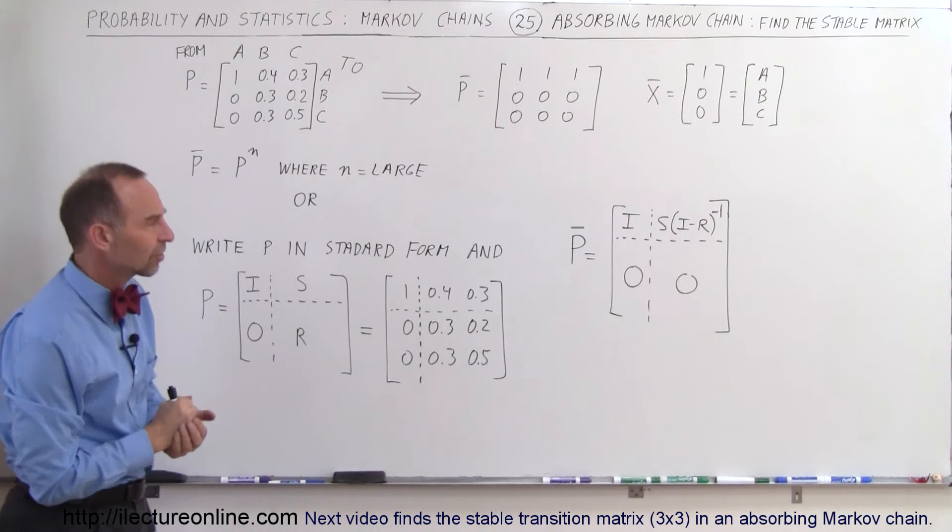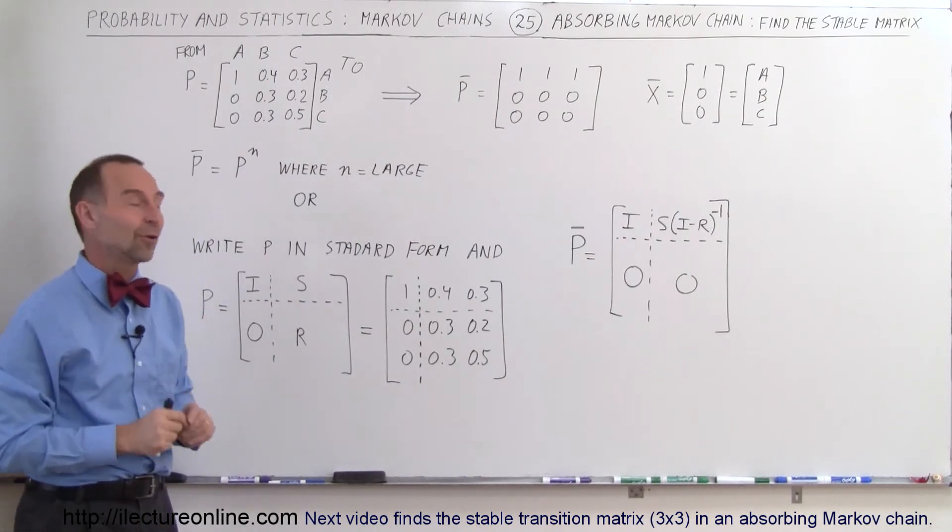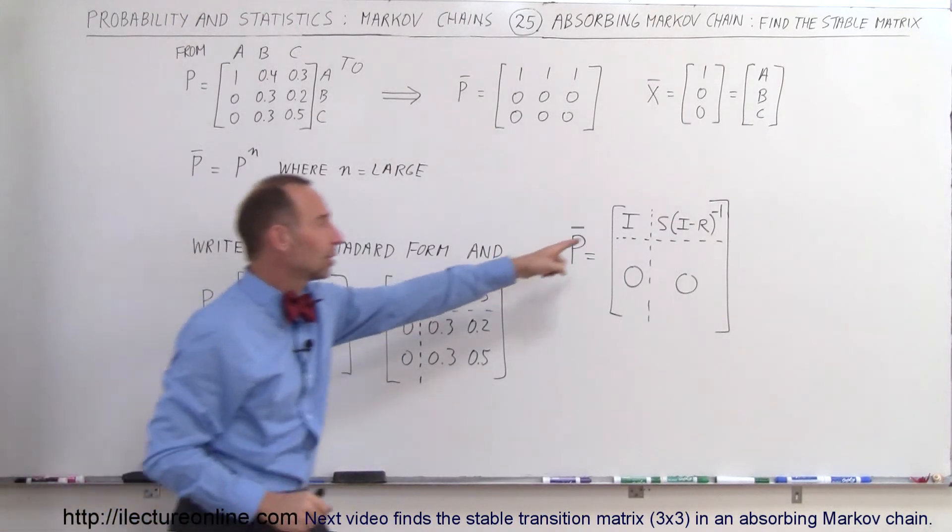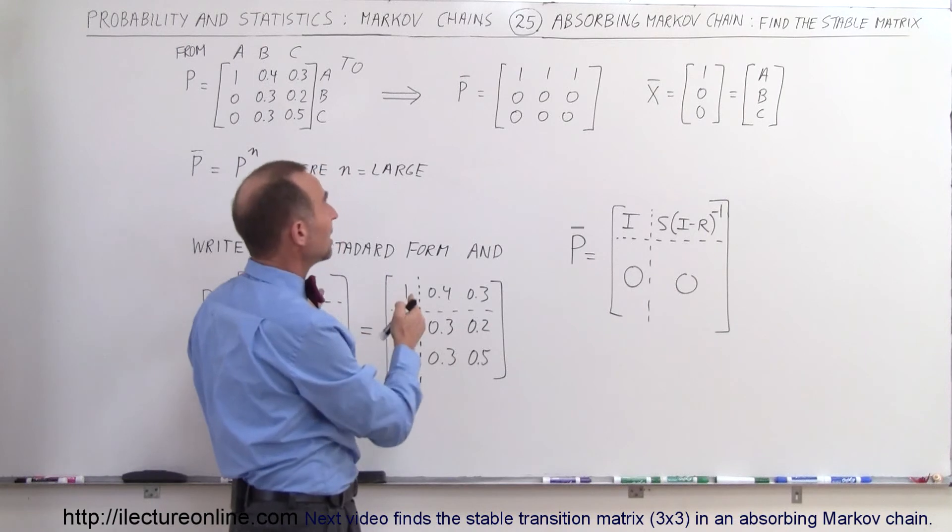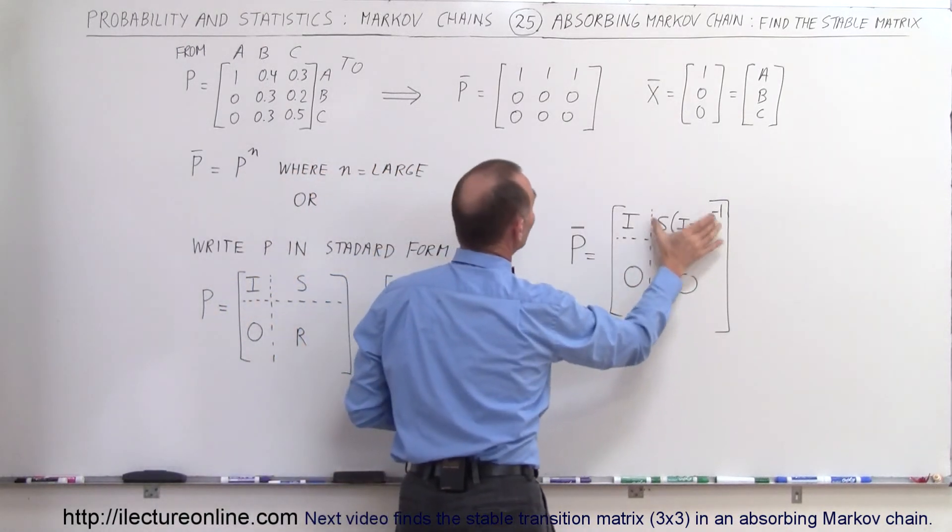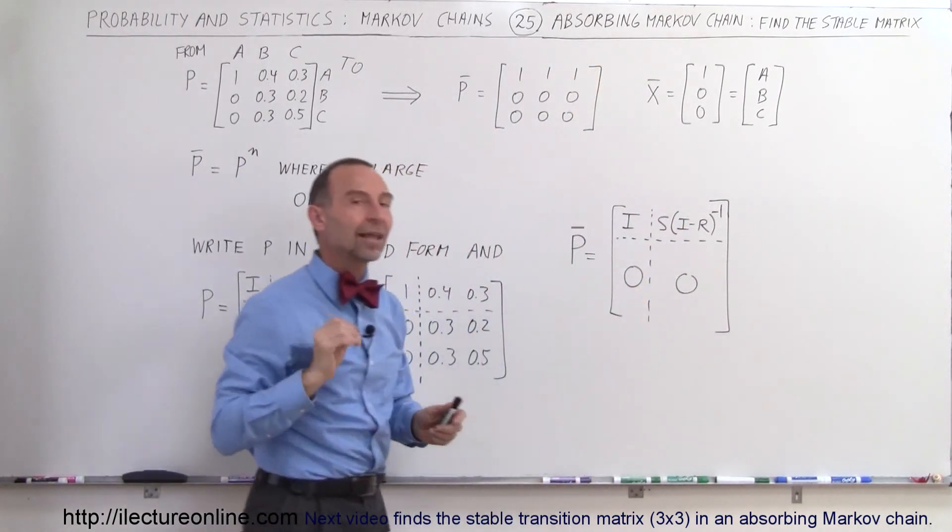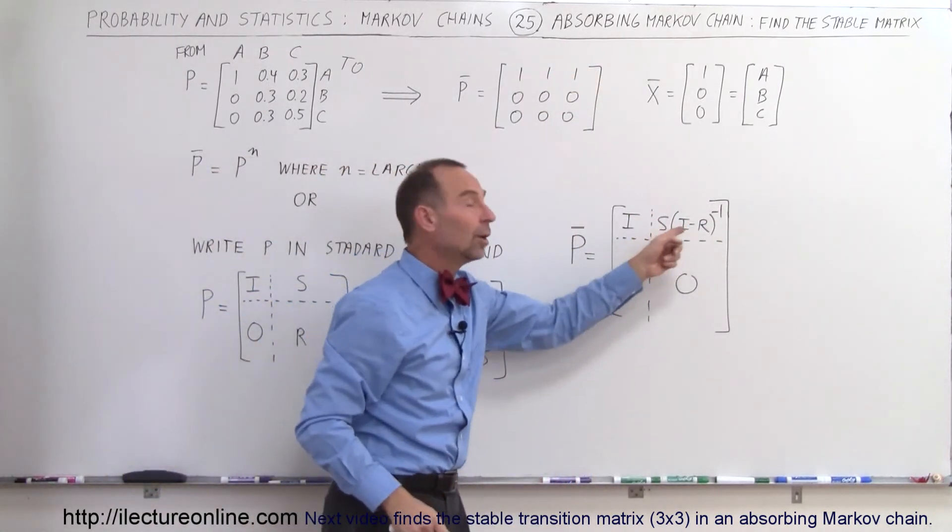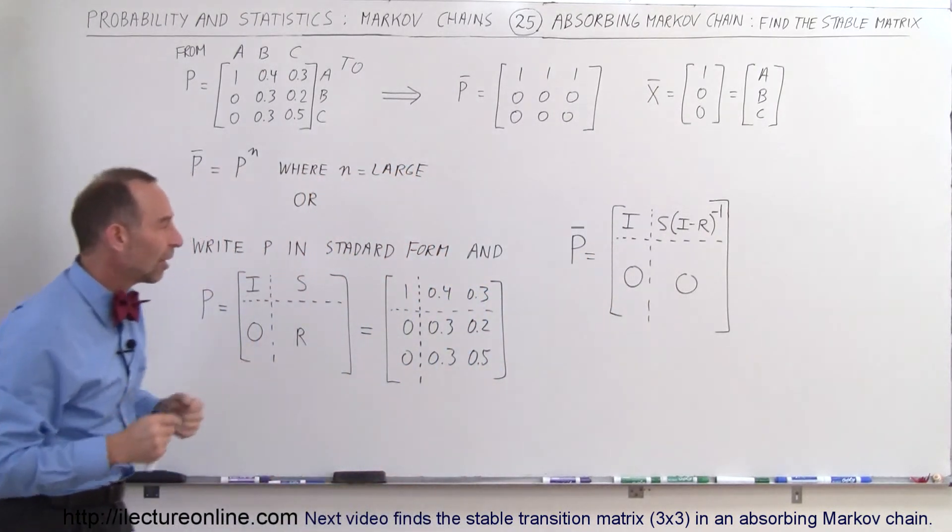Now you may say wow that looks kind of weird, how do I do that? Well that's what the next video is going to be for. We're going to take this matrix and we're going to calculate what this is equal to and of course in the end if this is indeed an absorbing Markov chain you realize that this will simply become equal to one and one. And so I'll show you how that happens. If this does not become one and one then we know we don't have an absorbing Markov chain.